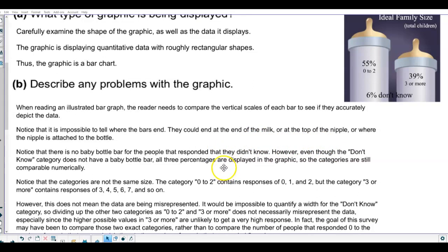Notice that there is no baby bottle bar for the people that responded that they didn't know. However, even though the don't know category does not have a baby bottle bar, all three percentages are displayed in the graphic, so the categories are still comparable numerically.